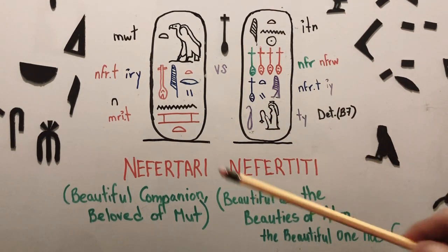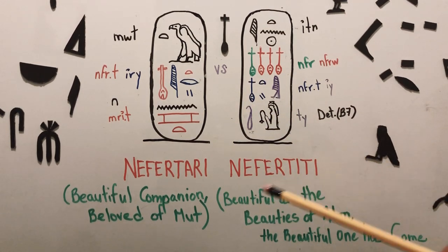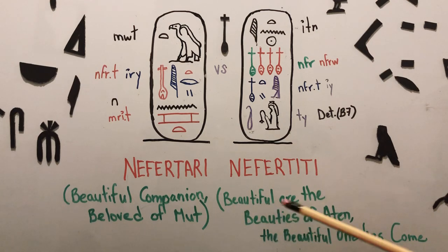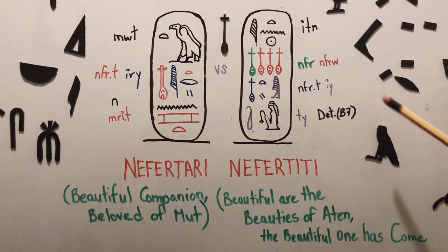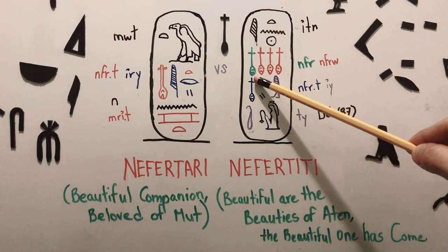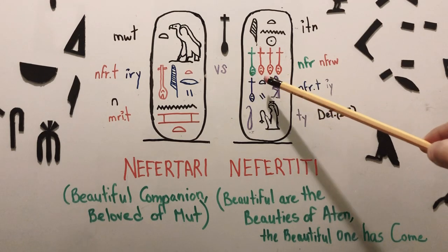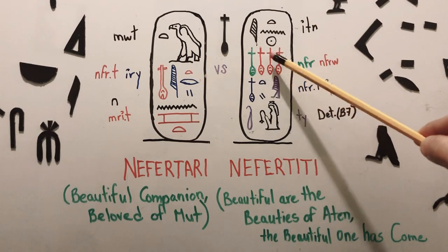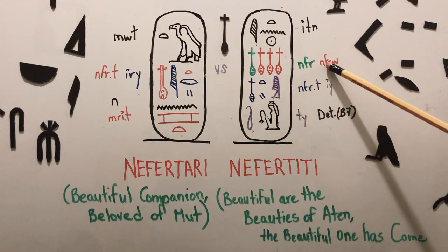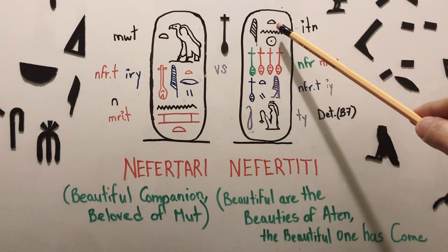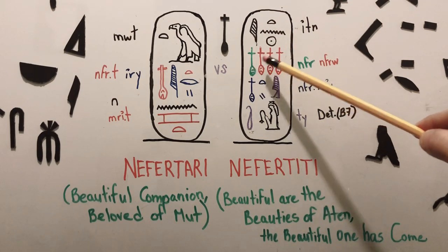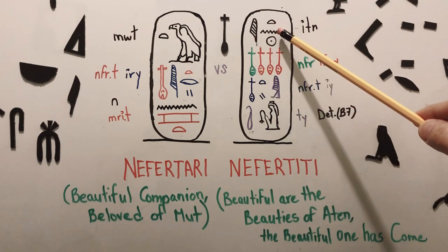Versus Nefertari is Nefertiti. Her name means beautiful are the beauties of Aten — the beautiful one has come. We'll start right over here: Nefer, Neferu — the singular and the plural — Nefer and Neferu. Aten. So beautiful are the beauties of Aten.